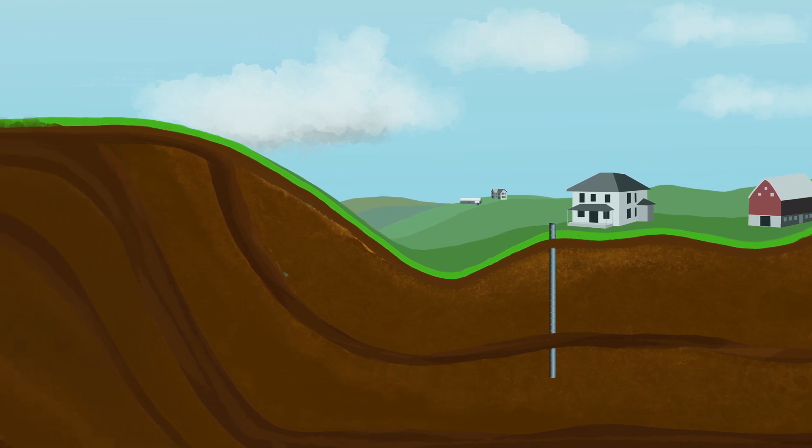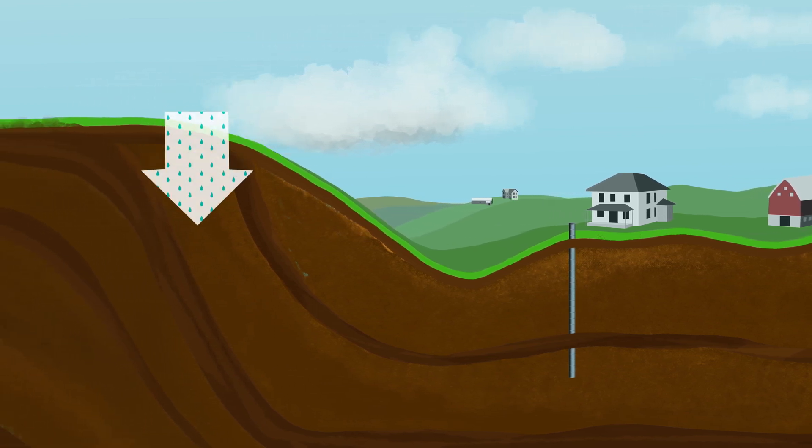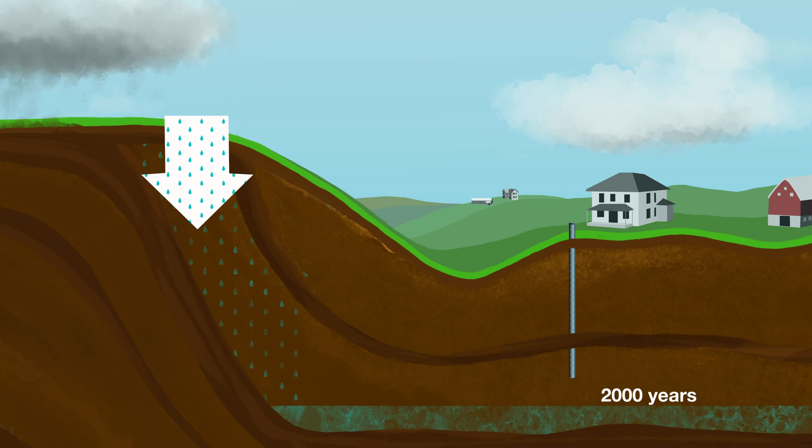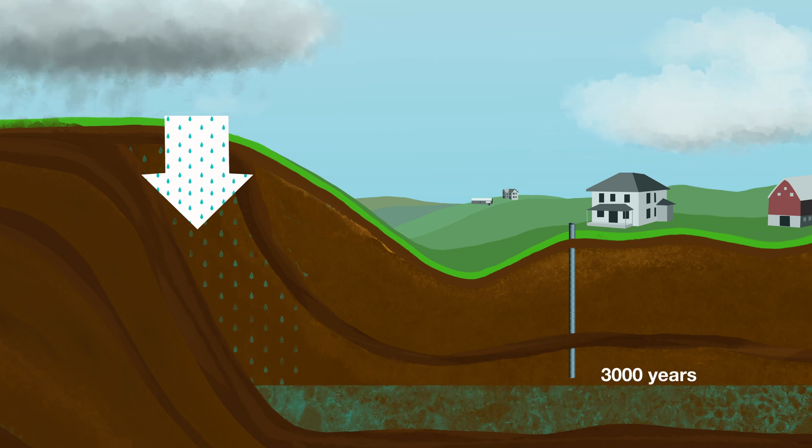Most water finds its way into the aquifer through an unconfined area, usually much further upslope from where we'd like to put our well, and travels for hundreds or thousands of years through the sediment to where our well is.